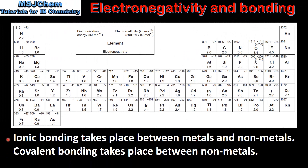So let's end with a summary. Ionic bonding takes place between metals and non-metals. Covalent bonding takes place between non-metals. For example, an element from group 1 such as potassium and an element from group 17 such as bromine will form an ionic bond because of the difference in electronegativity. Molecular oxygen, O₂, is composed of two oxygen atoms bonded together; because the difference in electronegativity is zero we'll have a non-polar covalent bond. And finally, a bond between carbon and chlorine will be a polar covalent bond because of the difference in electronegativity between the atoms.